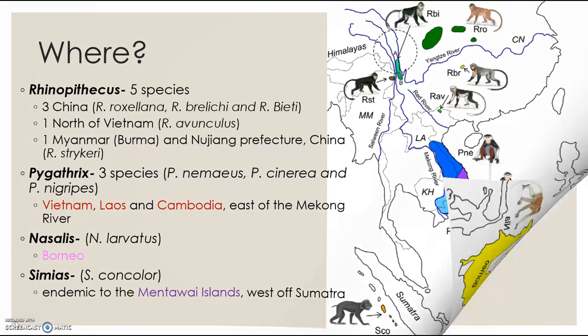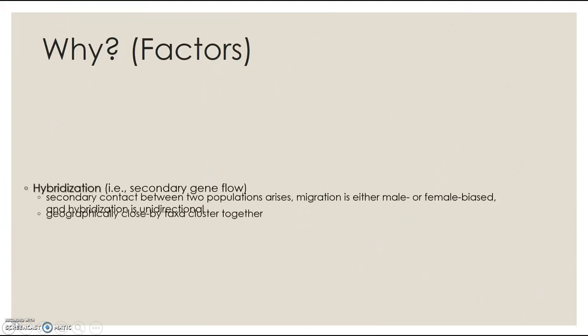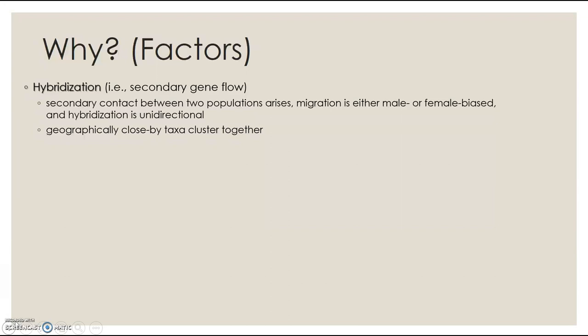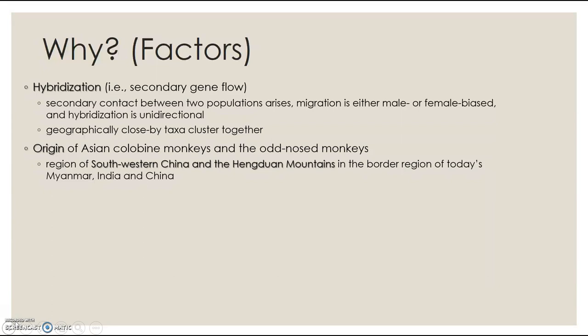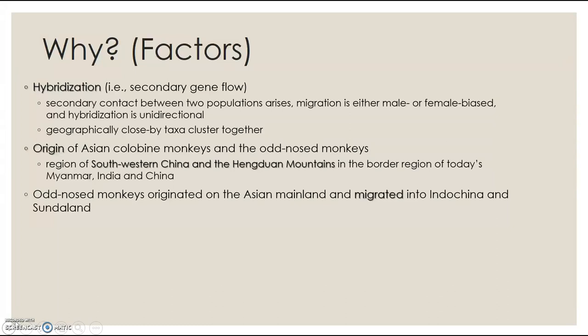This is the distribution pattern of the monkeys — they are found in Indochina and also some parts of Sundaland. This distribution occurs because of hybridization and secondary gene flow, which cause close-by taxa to cluster together geographically. The origin of Asian odd-nosed monkeys is in southwestern China and the Hengduan Mountains, and they migrated into Indochina and Sundaland from China southward while expanding their range.